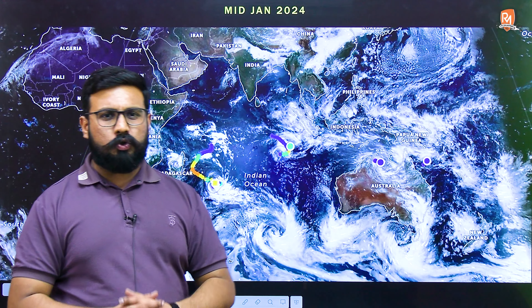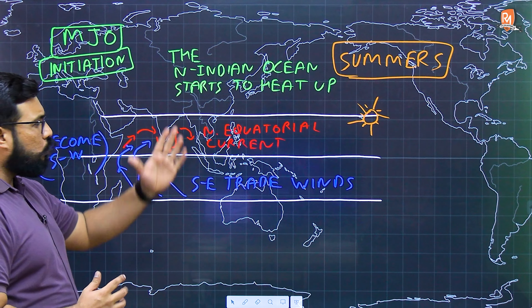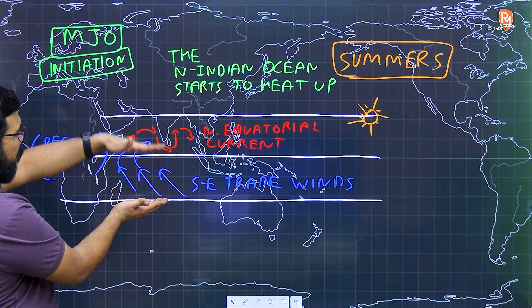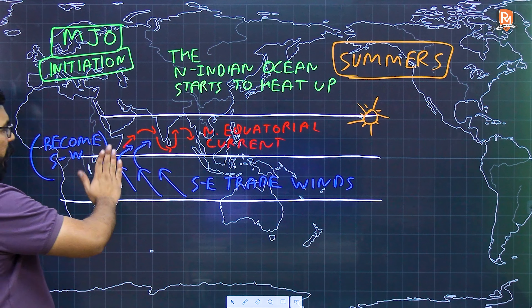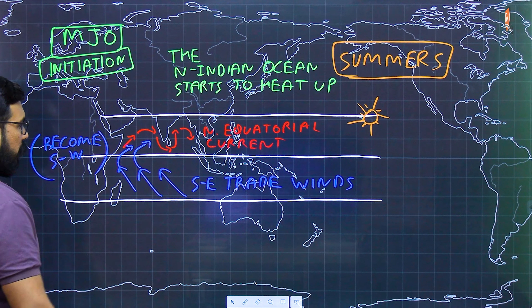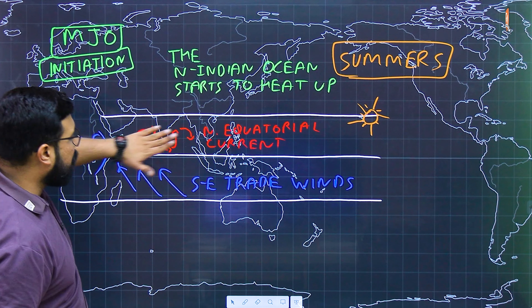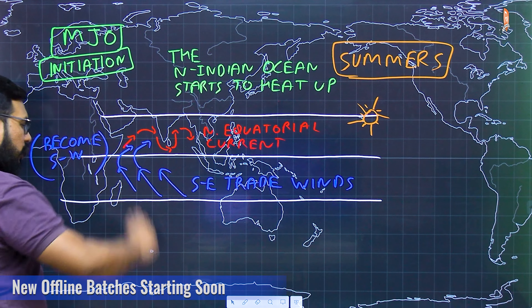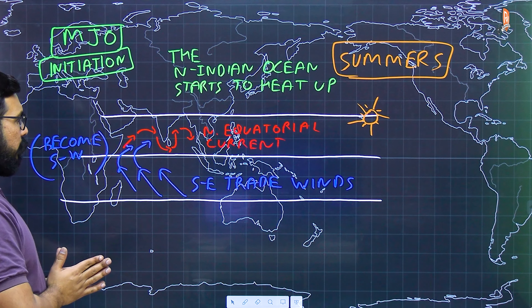During summers, our main monsoon season — we'll cover the Madden-Julian Oscillation later — the ITCZ is in the northern hemisphere along the Tropic of Cancer. The southeast trade winds cross the equator and deflect towards the right in the northern hemisphere due to the Coriolis effect, entering the northern hemisphere as the southwesterlies. Along with these southwesterly winds, the north equatorial ocean current of the north Indian Ocean starts moving from west to east.